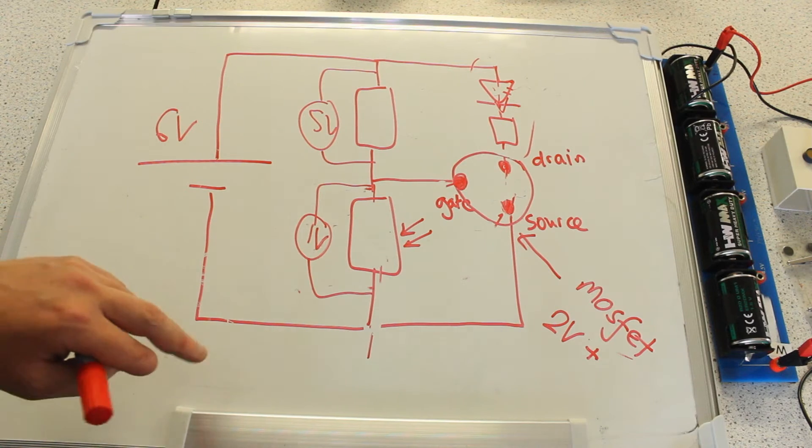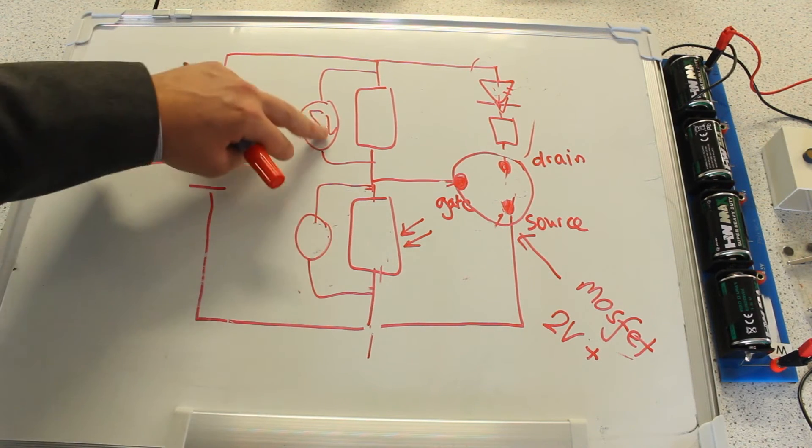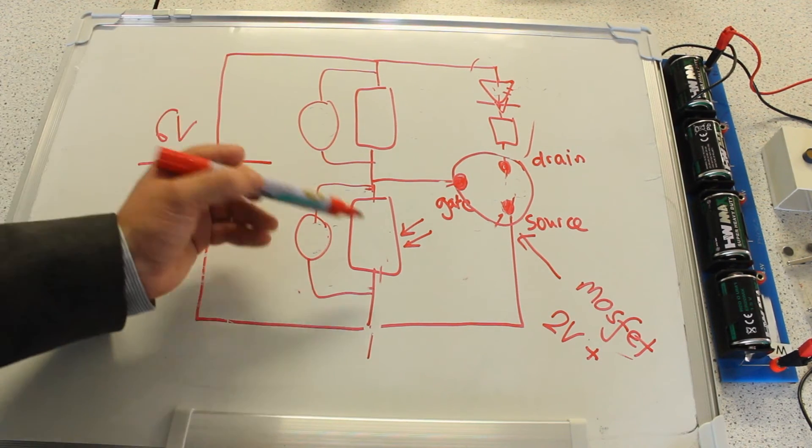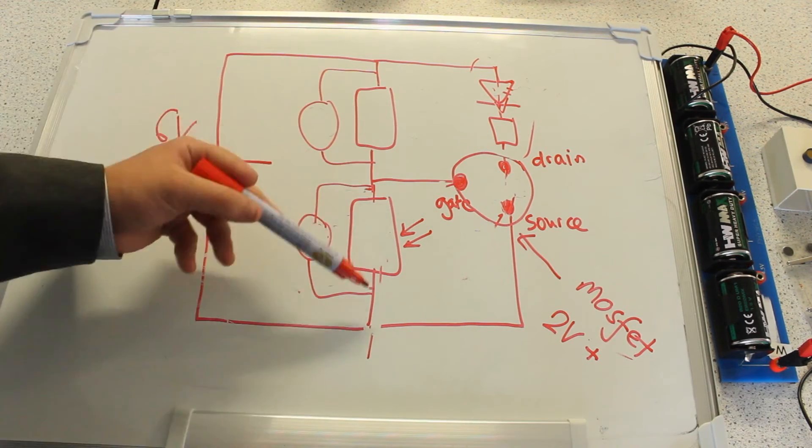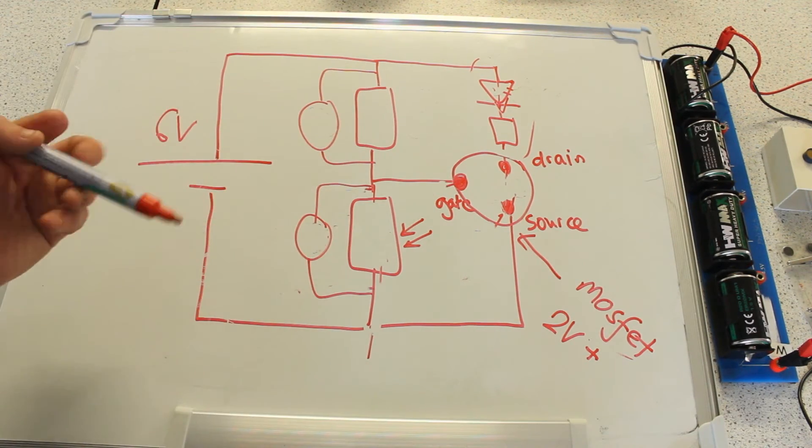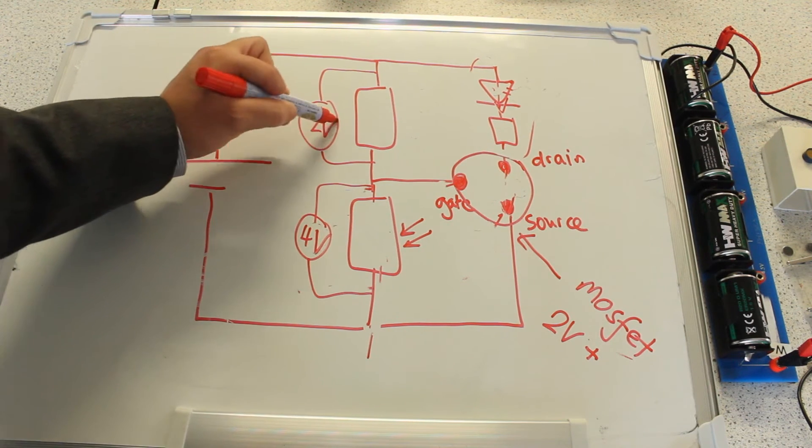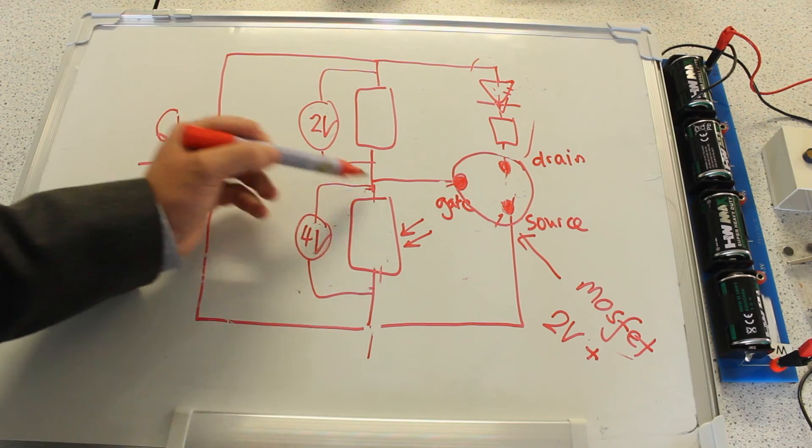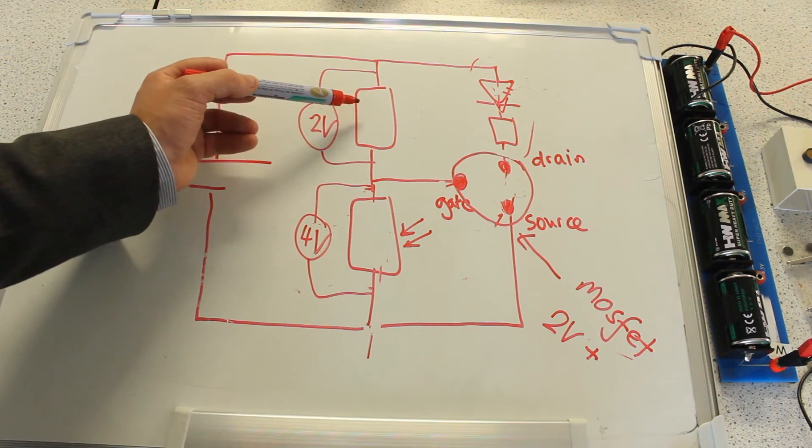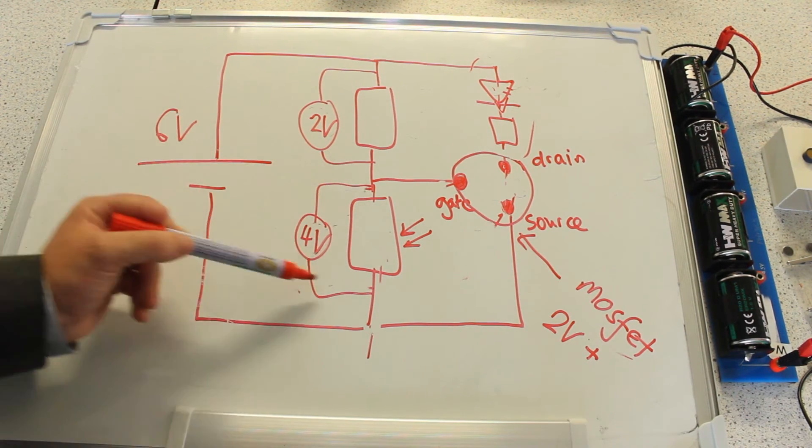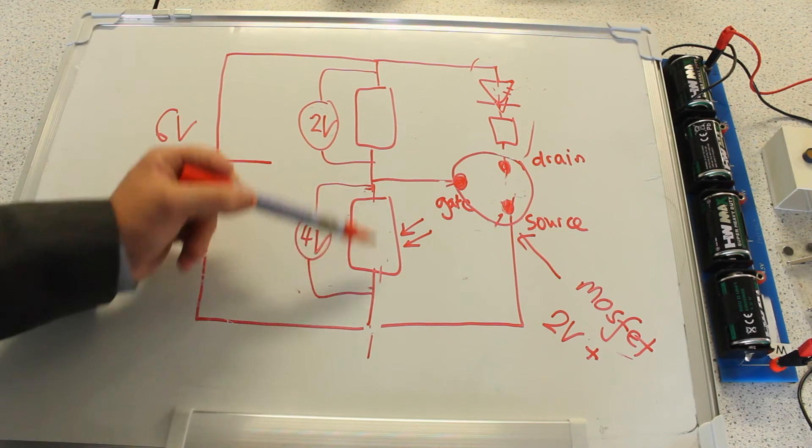When we cover the LDR, its resistance shoots up. Because its resistance is now a greater proportion of the overall resistance of this branch, the voltage drop over it also increases. The LDR now has a much higher resistance than the fixed resistor, so more of the voltage supplied by the battery is dropped over that component.